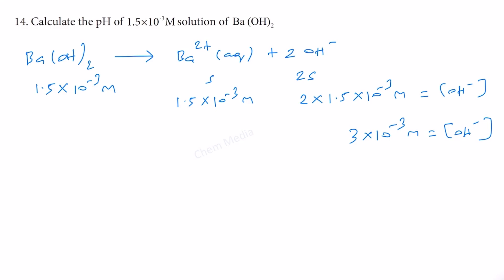Let us first calculate the pOH then we will calculate the pH. pOH equals minus log base 10 the concentration of OH-. Here the concentration of OH- is 3×10^-3. This is in the form of log A times B that we can write as log A plus log B.